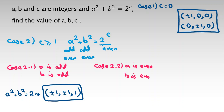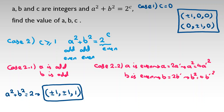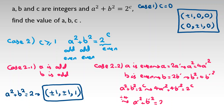Sub-case two-two: both a and b are even. Write a equals two a-prime, b equals two b-prime. Then a squared plus b squared equals four a-prime squared plus four b-prime squared equals two to the c. Dividing both sides by four gives a-prime squared plus b-prime squared equals two to the (c minus two). Setting c-prime equals c minus two, we get a-prime squared plus b-prime squared equals two to the c-prime, which is exactly the original equation.